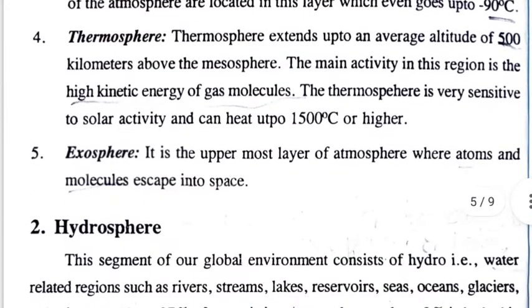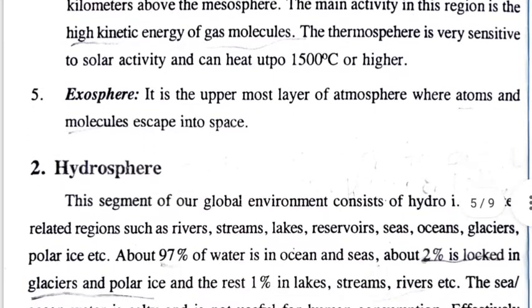The fourth layer is the thermosphere, extending up to 500 km. The thermosphere is very sensitive to solar activity and can heat up to 1500 degrees Celsius.